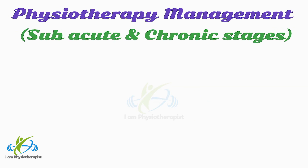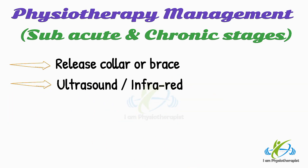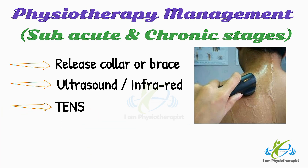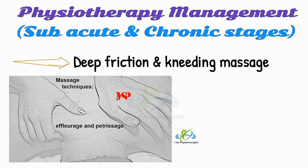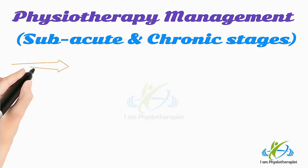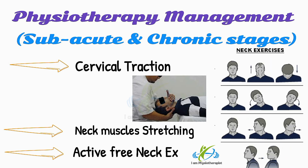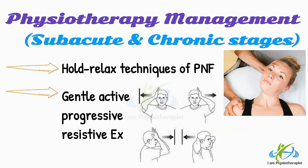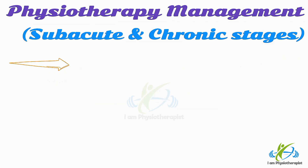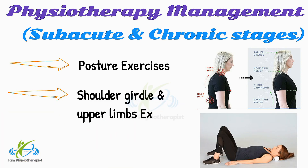In sub-acute and chronic stages: release the collar or brace. Heat application including ultrasound and infrared, electrical stimulation including TENS to relieve pain, deep friction and kneading massage, continuous traction, neck muscle stretching exercises, active free neck exercises, contract-relax techniques of PNF, gentle active progressive resistive exercises, posture exercises to correct lordosis and forward head posture, and shoulder girdle and upper limb exercises.